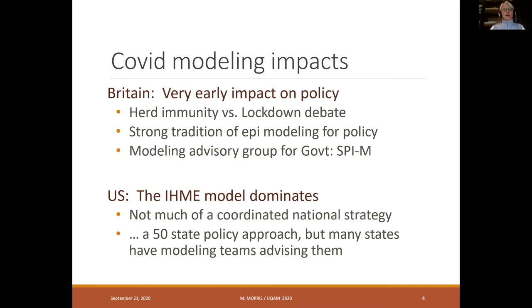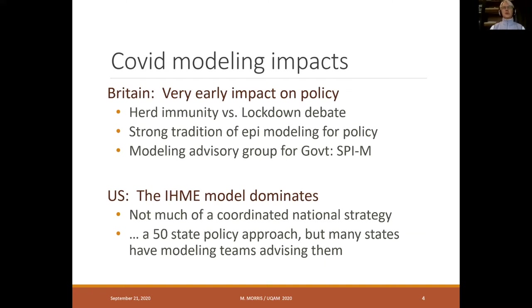There was a robust debate about the two possible approaches to dealing with COVID: one focusing on herd immunity, where you let people become ill and recover with immunity, thereby vaccinating the herd once you reach a high enough level of immunity. The alternative is lockdown. This debate is not yet over. Britain has a strong tradition of epidemic modeling in the university setting, and connecting epidemic modeling to policy. Some of the most important examples were the outbreak of foot and mouth disease in Great Britain.